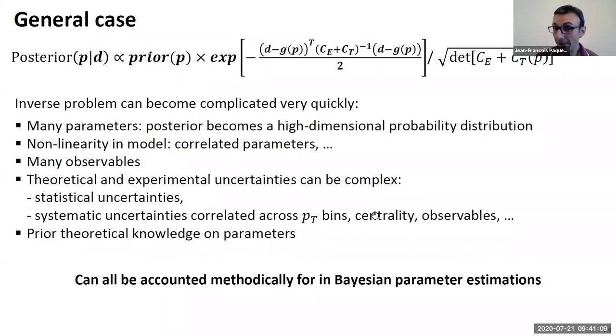All of this can be taken into account by defining properly your covariance matrices here. This has an effect on your Bayesian parameter estimation. The Bayesian parameter estimation gives you a tool to do it, but it can become overwhelming because you need to import a lot of information into your parameter estimation.